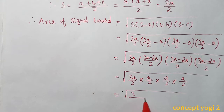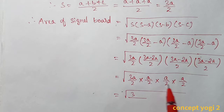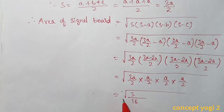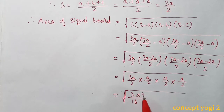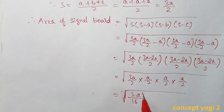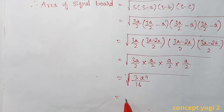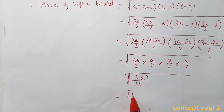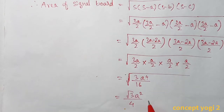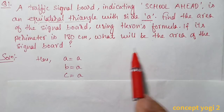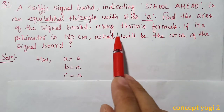Multiplying: 2 × 2 × 2 × 2 = 16 in the denominator, and a⁴ in the numerator with the factor 3. So we get √(3a⁴/16) = (√3 · a²) / 4. This is the area of the signal board — Area = (√3 / 4) · a².